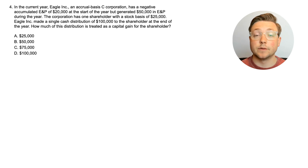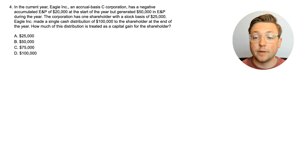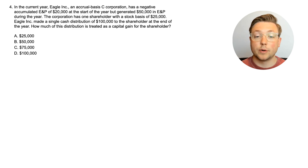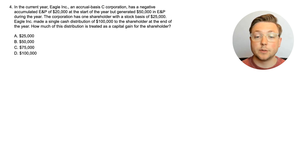Here is question four. In the current year, Eagle Inc., an accrual basis C-Corporation, has a negative accumulated E&P of $20,000 at the start of the year, but generated $50,000 in E&P during the year. The corporation has one shareholder with a stock basis of $25,000. Eagle Inc. made a single cash distribution of $100,000 to the shareholder at the end of the year. How much of this distribution is treated as a capital gain for the shareholder?